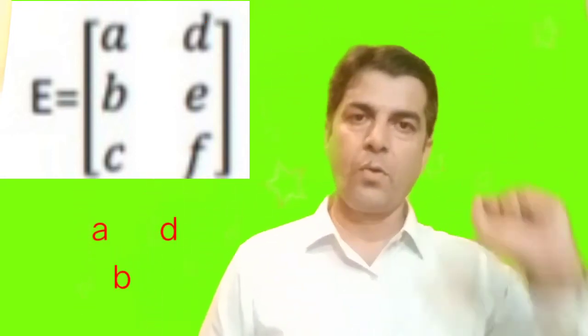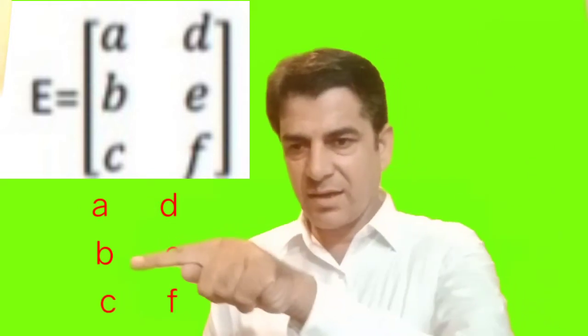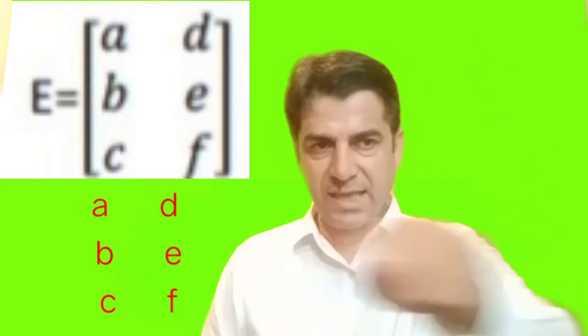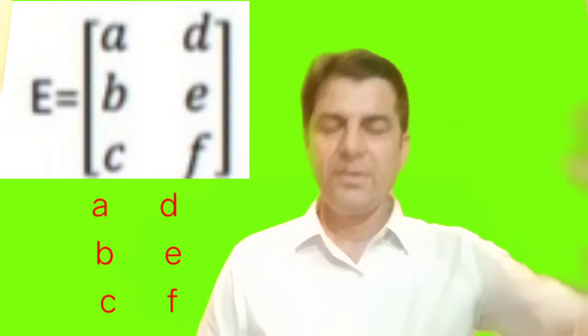Similarly, the horizontally arranged elements are called rows. As you are sitting in the class, this is the first row, this is the second, and that is third, and so on.